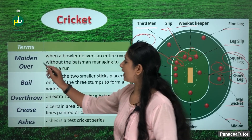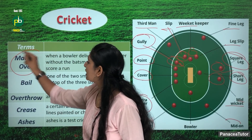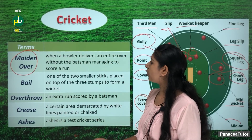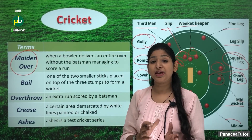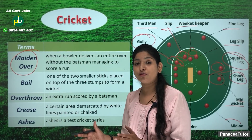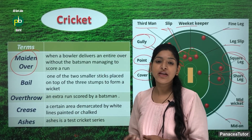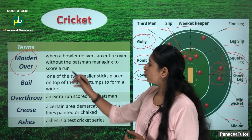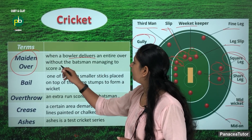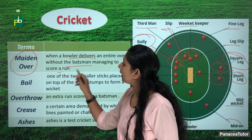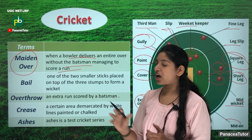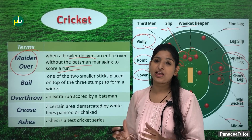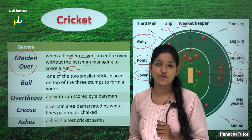There is a term — that is maiden over. What is the meaning of maiden over? It is a complete over where no run is scored. That means a maiden over is where there is no run in a complete over.